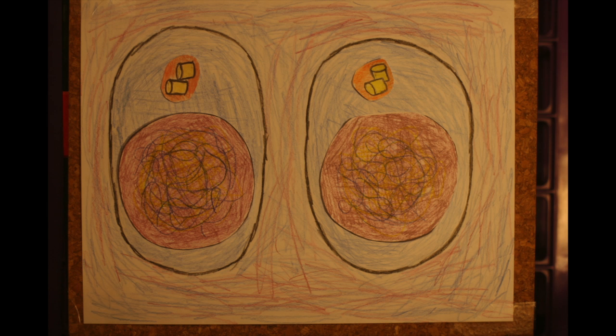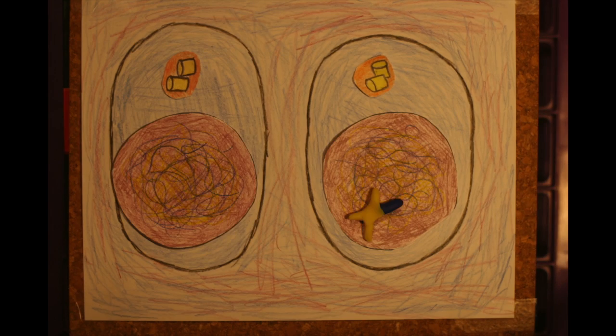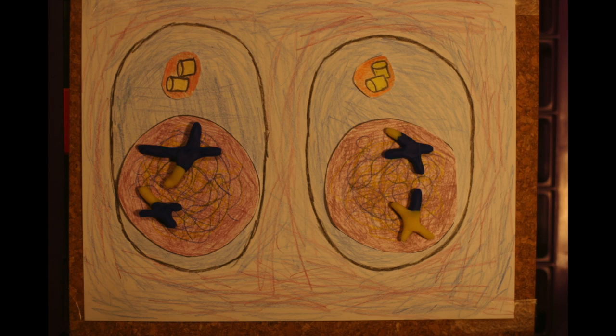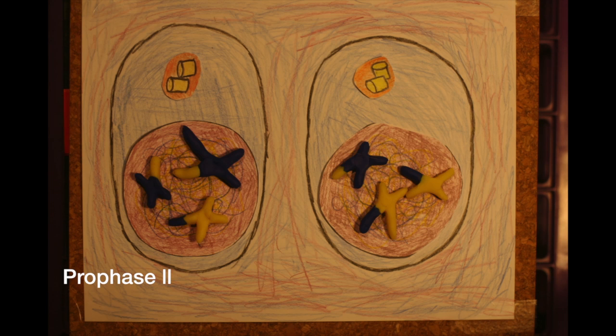Meiosis two goes through the same stages as meiosis one, so we start with the chromosome we left off with. This time, no replication of DNA occurs in these two daughter cells.